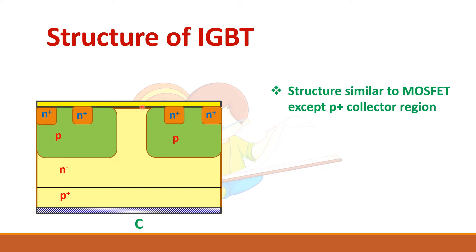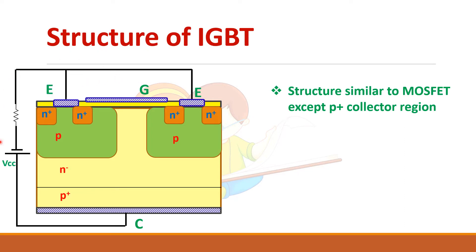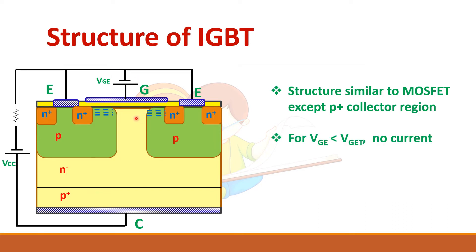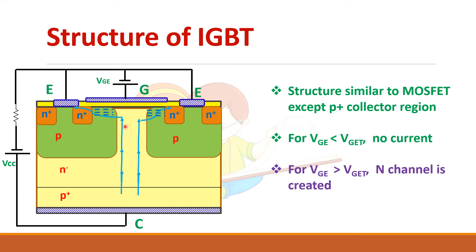The SiO2 layer separates the gate from the rest of the structure. Metallic contacts are made to bring out the gate and emitter terminals. As long as there is no gate voltage, no current will flow and no channel will be formed. When you apply gate voltage, until the threshold value is reached the channel will not be created. Once the threshold value is exceeded, current starts to flow.